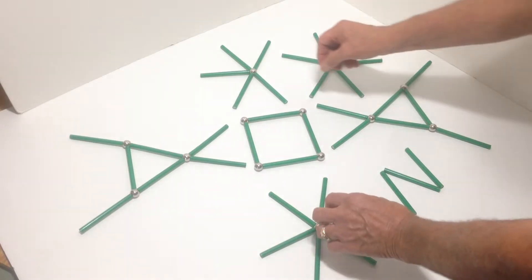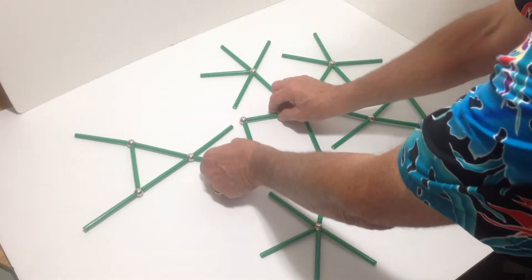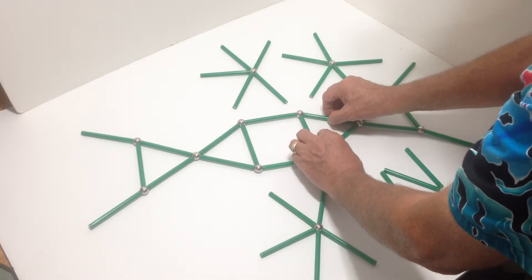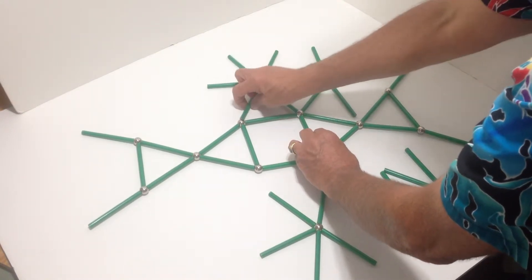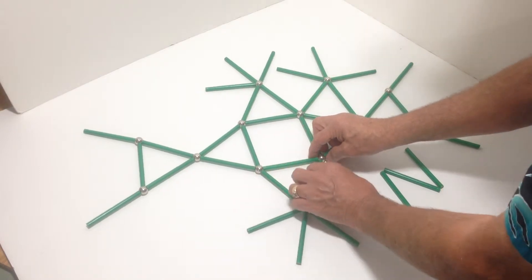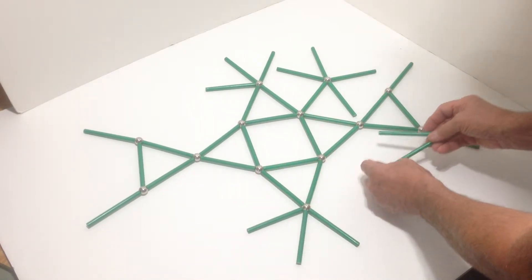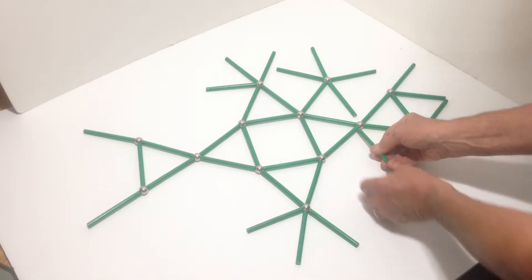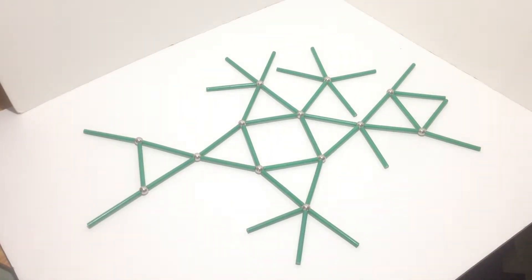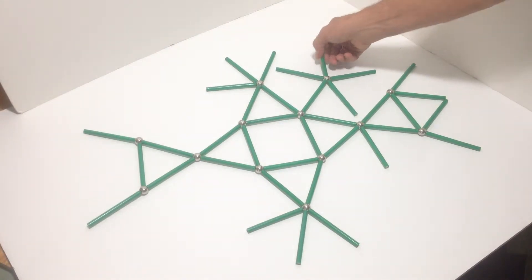And then you put them together like this. And then the vector equilibrium is assembled by bringing this up first.